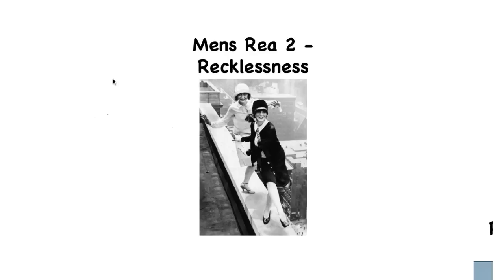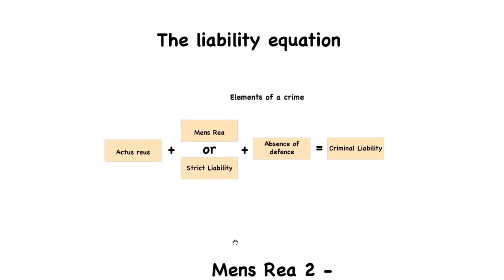Let's take a look at another element of mens rea: recklessness. This is likely to be a relatively short video because it's quite a simple concept. I'll start by going up to my liability equation, the way I start most of the mens rea and actus reus videos. We have to show in the first instance that actus reus is present, then we look to see whether the defendant has the specific mens rea — or strict liability, which we'll deal with in a different video — and then we ask whether there is a defense before we can construct criminal liability.